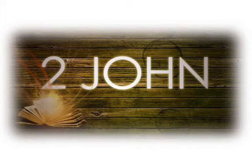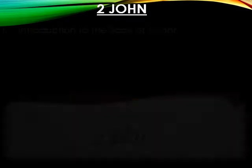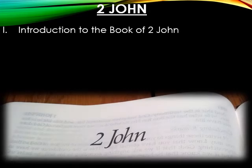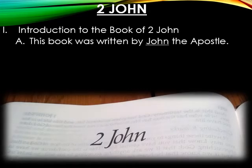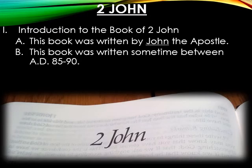Let's get started with the book of 2 John. Concerning the introductory material, this book was written by John the Apostle. Although John does not directly identify himself as the author, it has been the traditionally held view for the last 2,000 years. This was the Apostle considered the best friend of Jesus. This book was written sometime around A.D. 90, while John was living in the city of Ephesus.